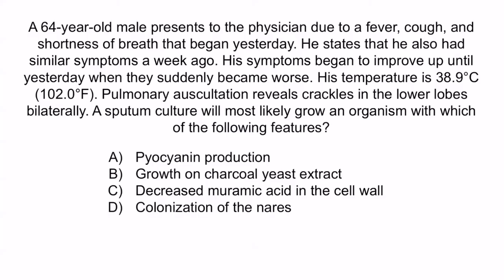Let's review with a question. A 64-year-old male presents to the physician due to a fever, cough, and shortness of breath that began yesterday. He states that he also had similar symptoms a week ago, which began to improve up until yesterday when they suddenly became worse. His temperature is 38.9°C (102°F). Pulmonary auscultation reveals crackles in the lower lobes bilaterally. A sputum culture will most likely grow an organism with which of the following features? A. Pyocyanin production. B. Growth on charcoal yeast extract. C. Decreased muramic acid in the cell wall. Or D. Colonization of the nares. From the question stem, this patient had the flu followed by secondary bacterial pneumonia — the correct answer is D, colonization of the nares.